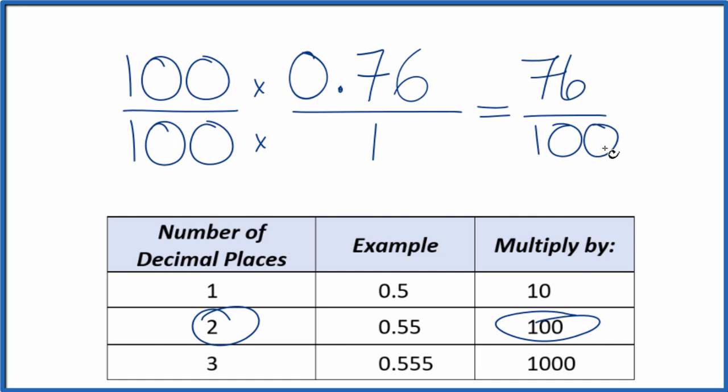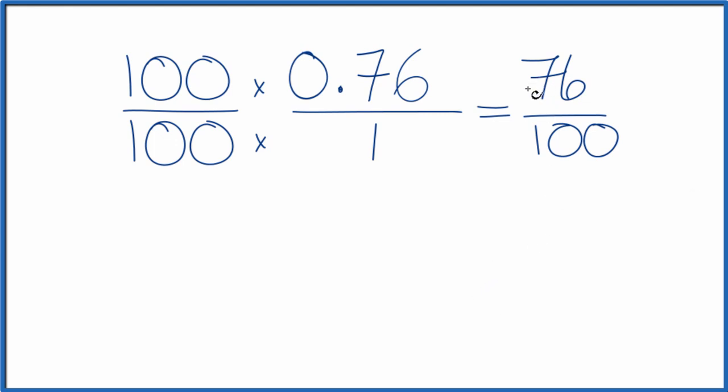But we should probably simplify this further. Let's give ourselves some room here. So we could divide 76 by 2 and 100 by 2. They're both even numbers. That would give us 38 over 50.